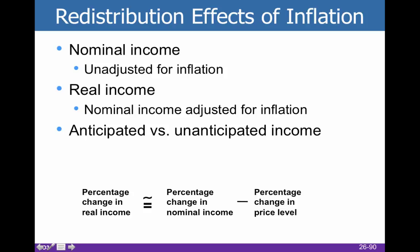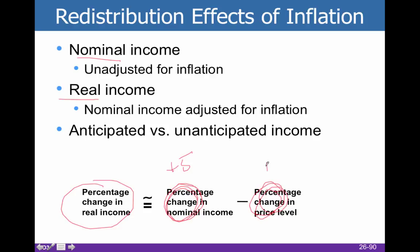Keep in mind we still have nominal income and real income. Nominal income is what's written on your paycheck — it's unadjusted for inflation. If we want to know our real income, we take the percent change in nominal income and subtract the percent change in price level. So if you get a raise of 5% but the inflation rate was 2%, your real income actually rose by only 3%. A 5% raise is actually only a 3% increase in purchasing power or real income.